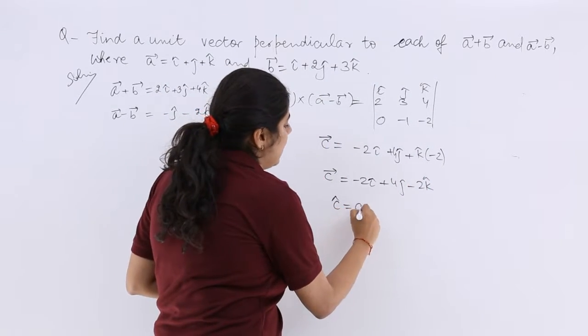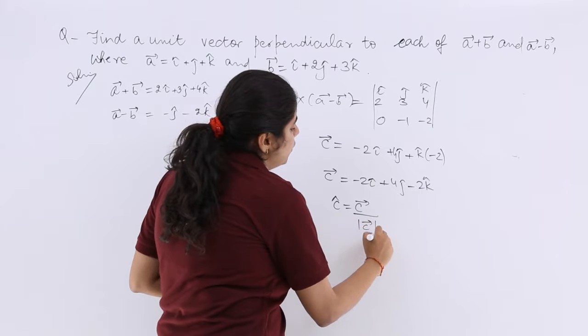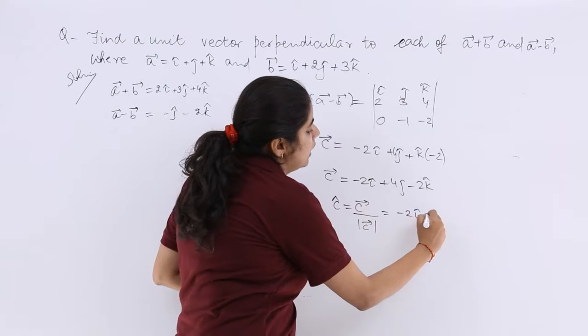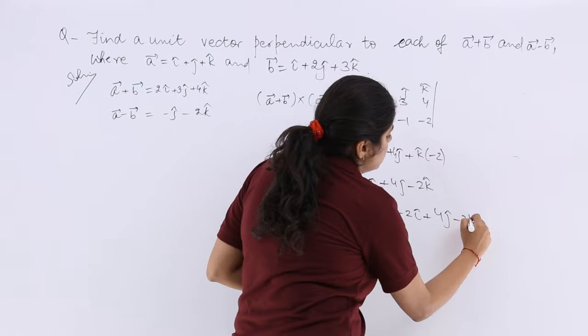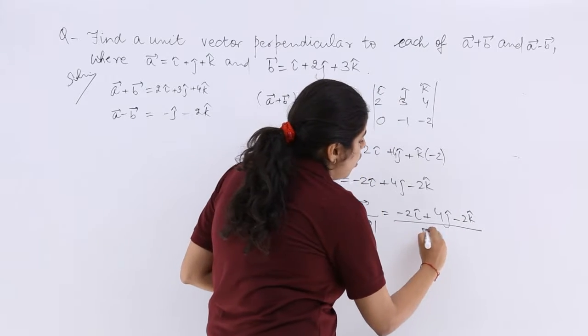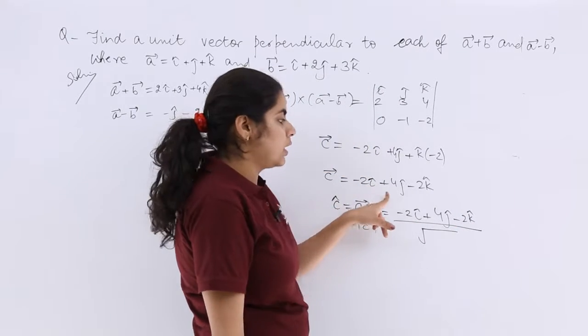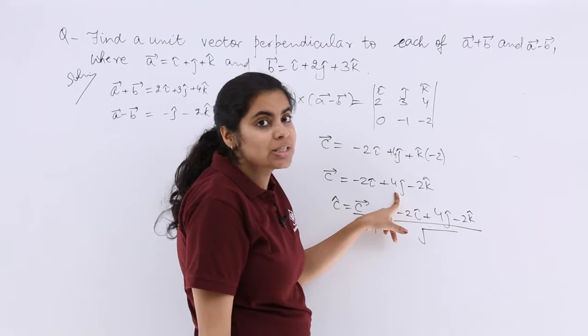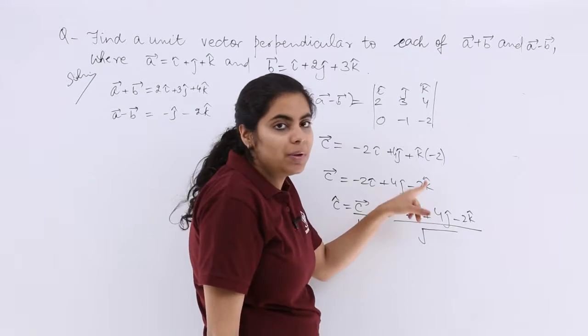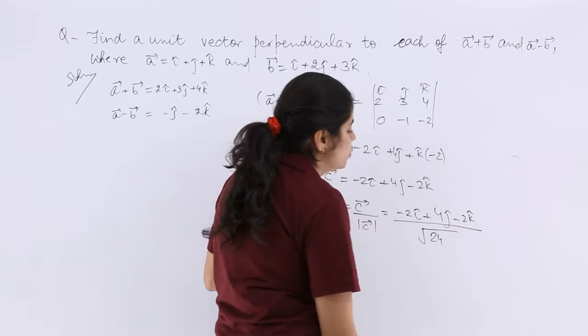So unit vector c cap is c vector upon mod of c. So it is minus 2i plus 4j minus 2k cap upon mod of c. So it is 4 plus 16, which is 20. 20 plus 4 is under root 24.